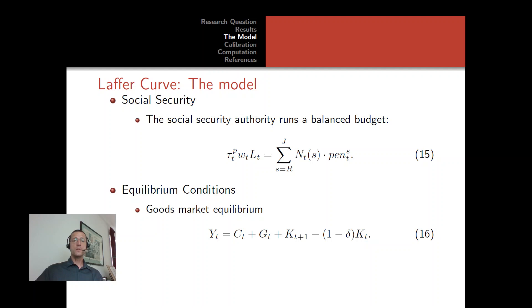We also have a social security budget. Total pension spending on the right-hand side covers retirees aged R=46 through J=70 — our 25 cohorts of retirees — financed by social security contributions tau_p levied on total wage income WLT. We adjust tau_p in our Laffer curve computation to balance budget equation 50.